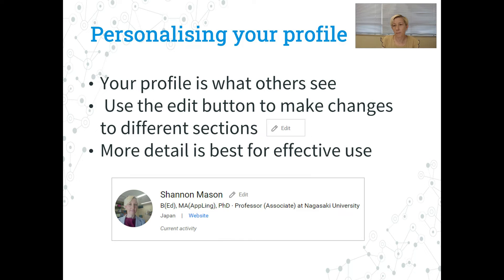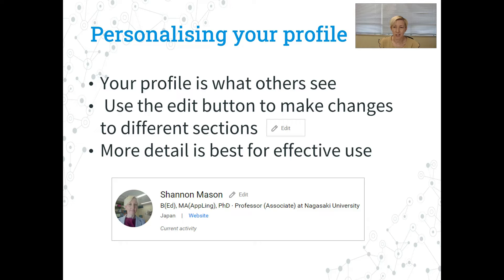Your profile page or home page is what others will see when they go to look at your account. When you go to the page yourself you'll see this edit button in many different places, and when you click on those edit buttons that's when you'll be able to personalize the different information on your profile page. ResearchGate works on algorithms, so the more detail that you give the more effective it's going to be — the better information you're going to get, and you're going to get connected to research and researchers who are connected to you in some way.